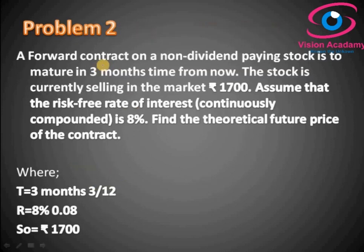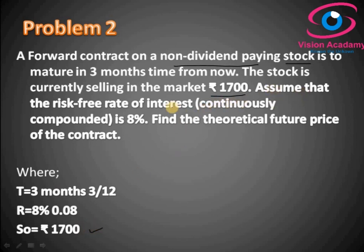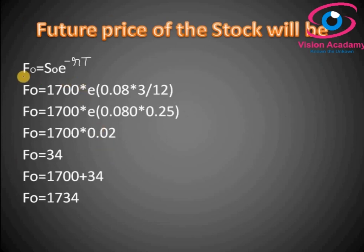Moving to Problem 2: a forward contract on a non-dividend paying stock that matures in 3 months from today. The stock is currently selling in the market — that is S0 — for 1700 rupees. Assume the risk-free rate of interest is 8%. Find the theoretical price of the contract. So T = 3 months, R = 8%, and S0 = 1700 rupees.